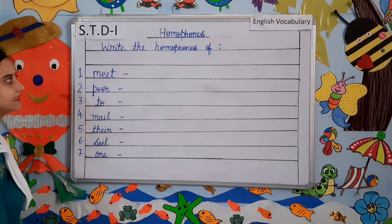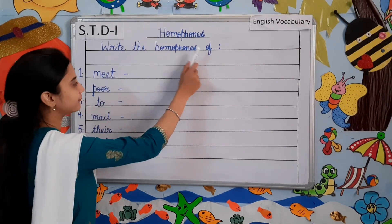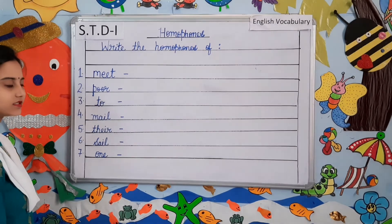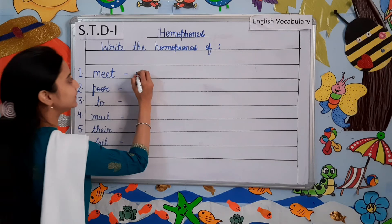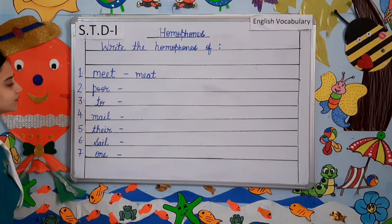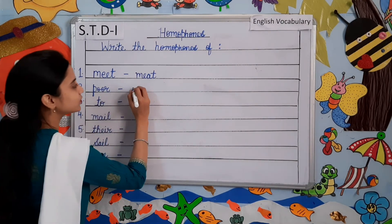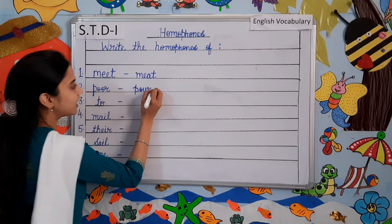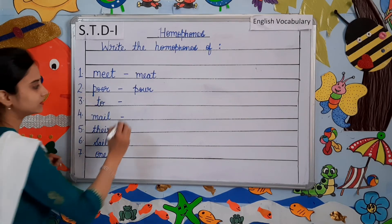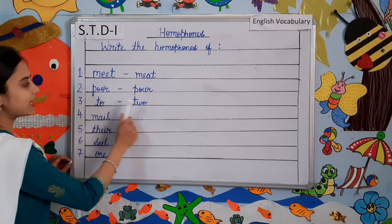Moving on to the next topic, that is homophones. Write the homophones of: Number one: M-E-E-T. Meet. So the homophone of meet will be meat: M-E-A-T. Number two: P-O-O-R. Poor. The homophone will be P-O-U-R. Pour. Number three: T-O-O. The homophone will be T-W-O. Two and too.